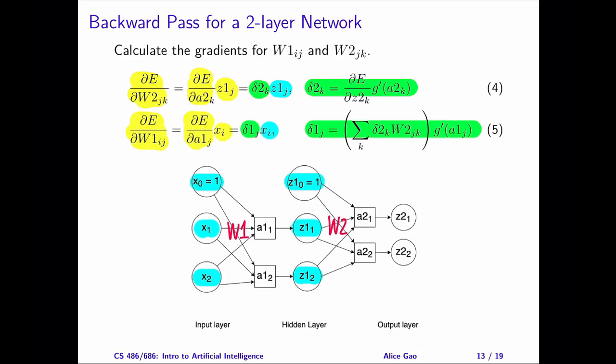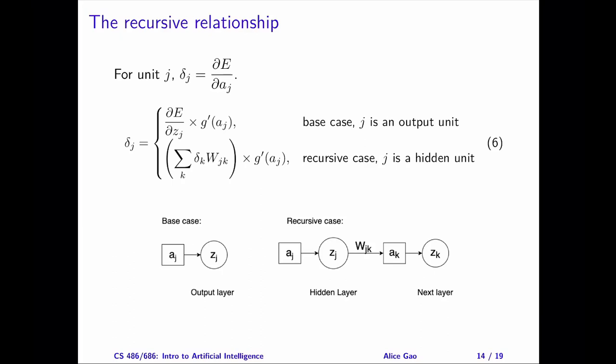The remaining question is: how do we calculate the delta values? I'm showing you the expressions for delta_2 for the output layer, and delta_1 for the hidden layer. Note that we need the delta_2 values to calculate delta_1 — this gives you a hint of what the recursive relationship looks like. This recursive relationship allows us to propagate the error backward through the network and calculate the gradients efficiently. This recursive relationship is also how the backpropagation algorithm got its name.